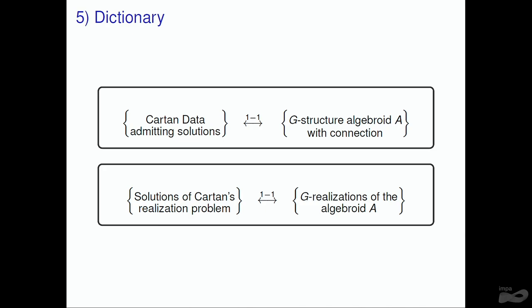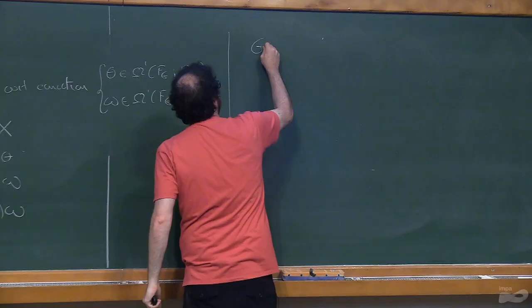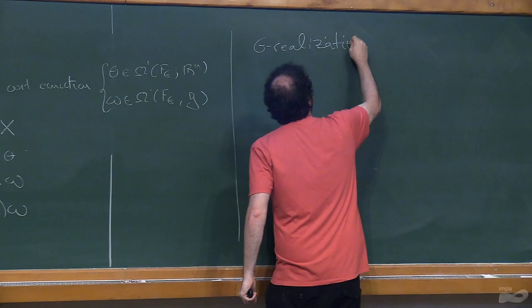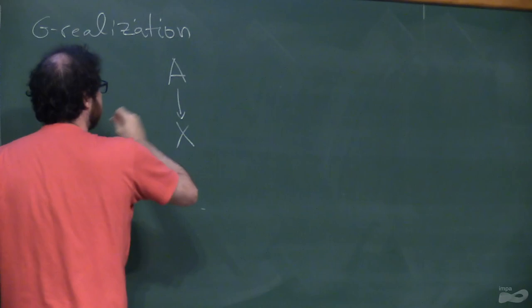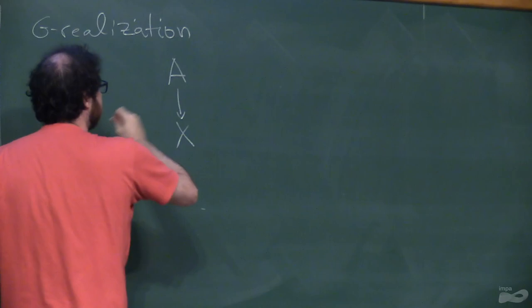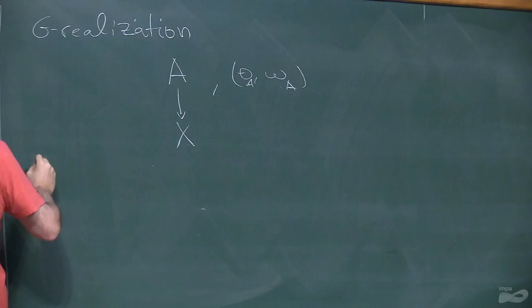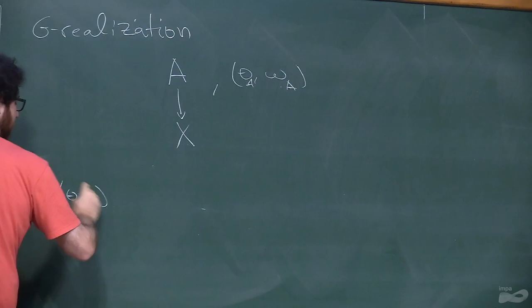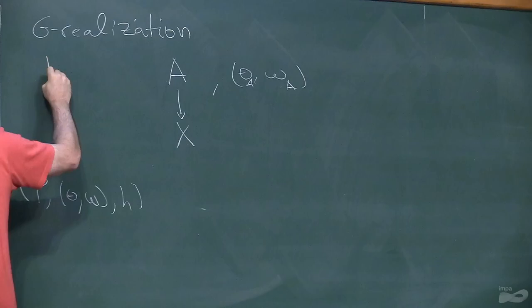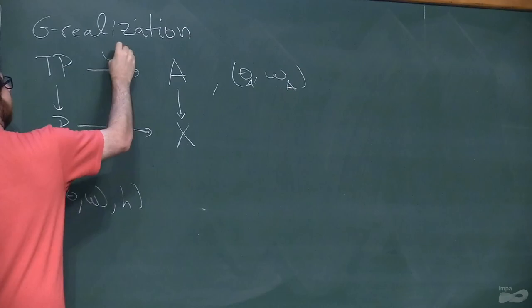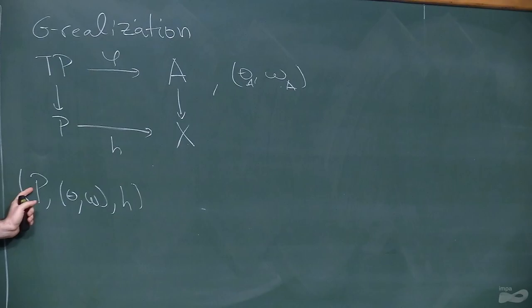He also said quickly that solutions of the Cartan problem correspond to G-realizations. A G-realization is a morphism: you have your G-structure algebraid A over X, which comes with a tautological form and a connection. A G-realization is a G-structure P with a tautological form, a connection, and a map H, such that TP over P with a map phi is a morphism of G-structure algebraids.